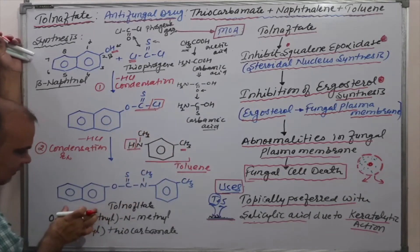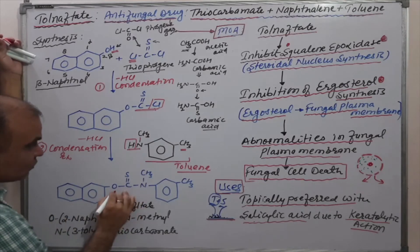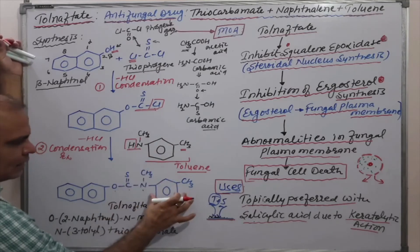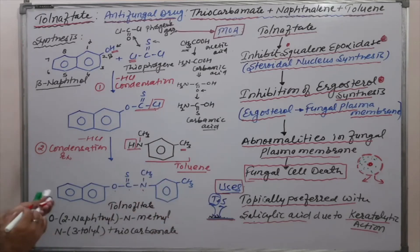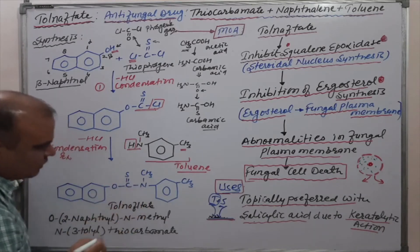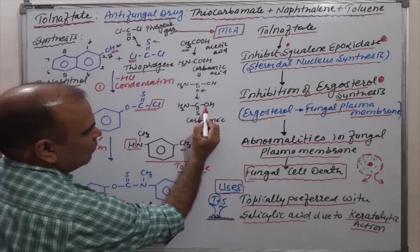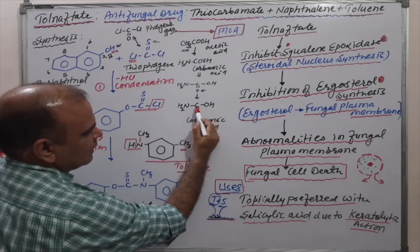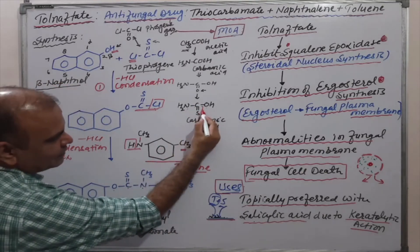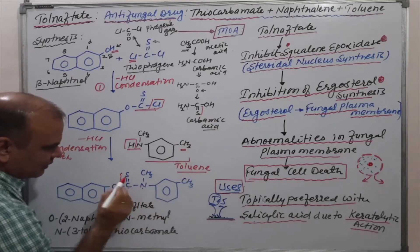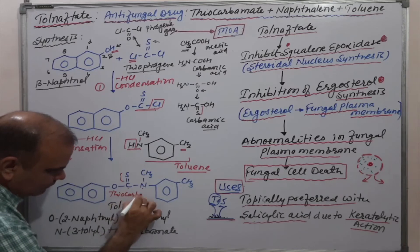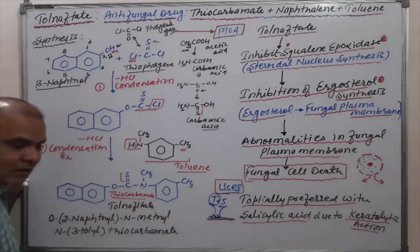The resulting product has beta-naphthol's oxygen connected through sulfur and nitrogen, with nitrogen attached to a methyl group. The linkage — oxygen, carbon, nitrogen — with carbon bearing a sulfur group — is called thiocarbonate. So the final structure contains: first, thiocarbonate as the key functional group; second, naphthalene (the ring system); and third, toluene.